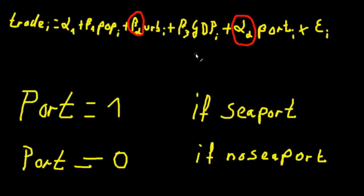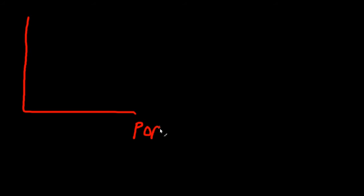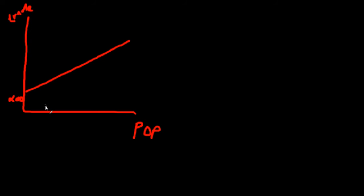Now imagine we only have one continuous explanatory variable — let's say population. How could we graph that relationship? The relationship would look like this: this axis is population and this axis is trade. The effect will obviously be positive. So this is 200. If we increase the population, we also increase the volume of trade, and that makes sense — the more people are in a given city, the higher will be the volume of trade.